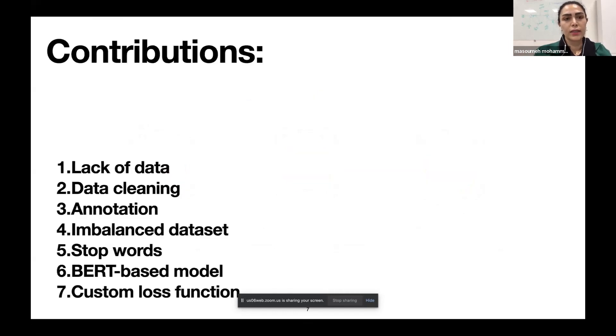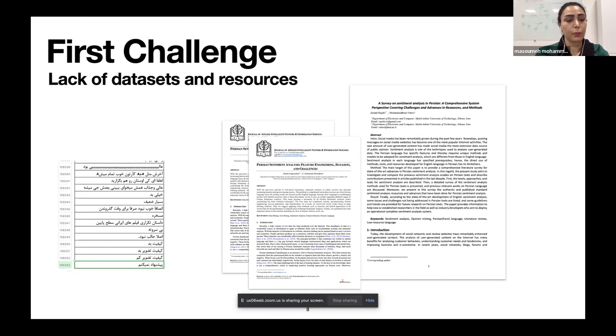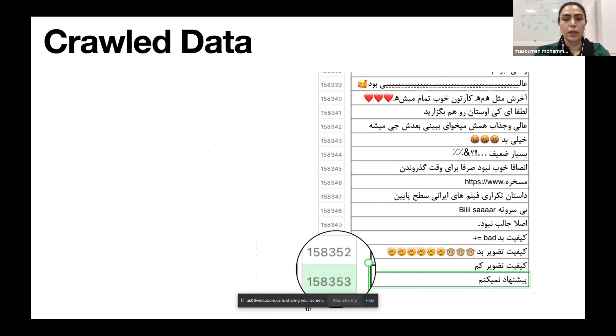I mentioned the importance of sentiment analysis and sharing ideas online. I go further with the challenges of the current study in Persian language and the contribution of the current paper. First challenge was lack of data sets and resources. Lack of data in Persian and any low-resource languages in NLP is a serious challenge. To meet the need, we start crawling movie comments from several Persian websites. The collected data is about 158,000 sentences which includes movie reviews.